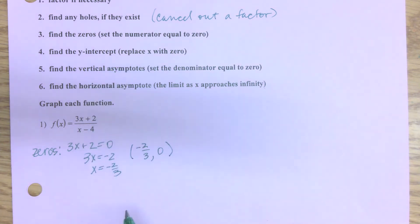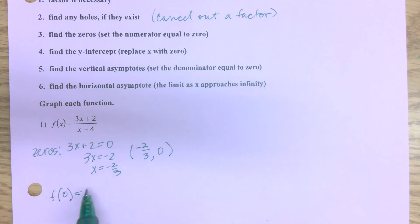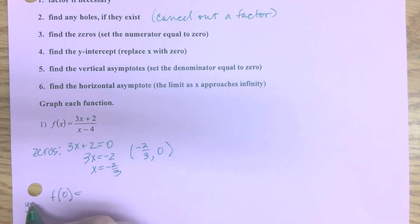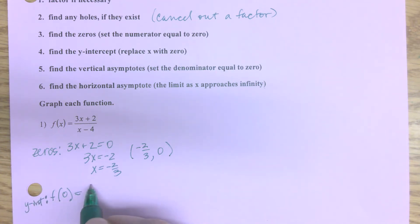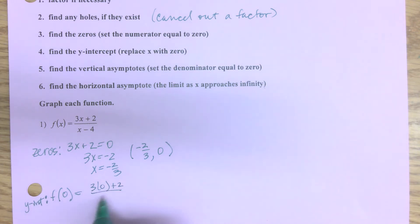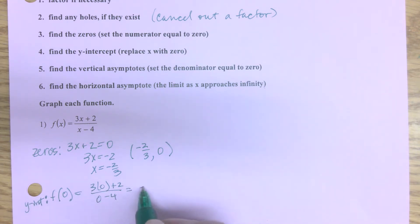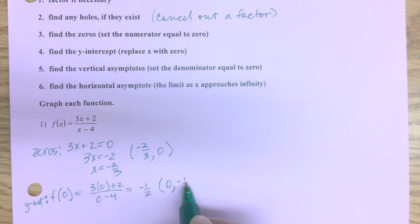Next I'll find my y-intercept. That's found by replacing all the x's with zero — basically f(0). So that's (3·0 + 2) / (0 - 4), which equals -1/2. We plot that as the point (0, -1/2).